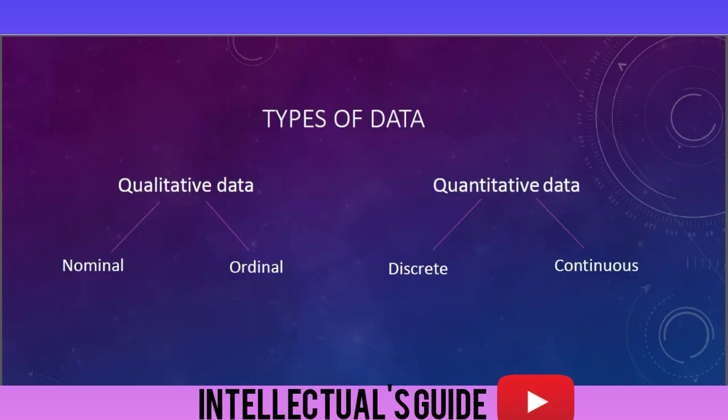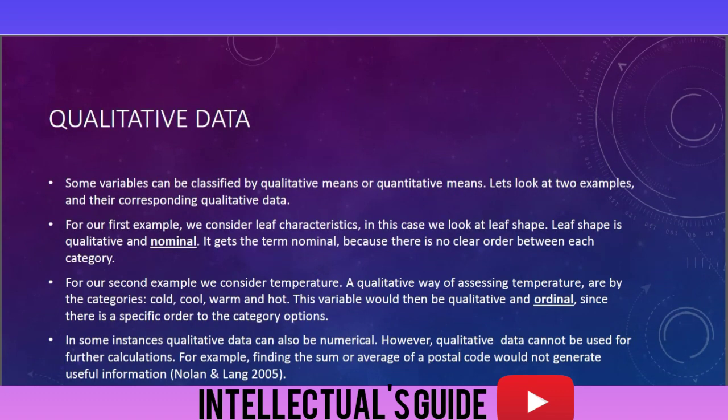Types of data: qualitative data—nominal data, ordinal data; quantitative data—discrete data, continuous data. Qualitative data: some variables can be classified by qualitative means or quantitative means. Let's look at two examples and their corresponding qualitative data.